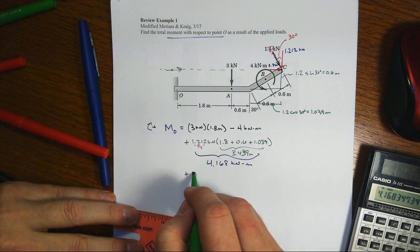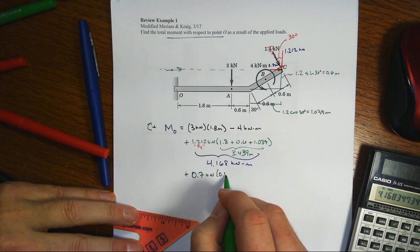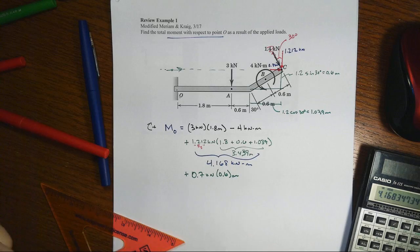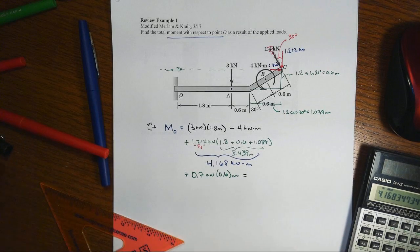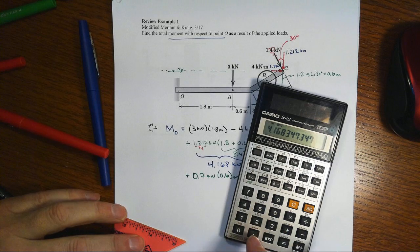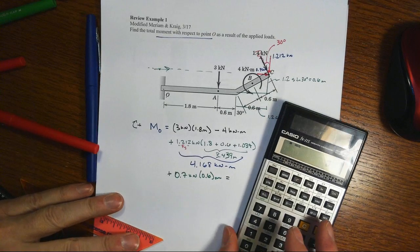The force was 0.7 kilonewtons, and the distance perpendicular is 0.6 meters, which of course is just 0.42.